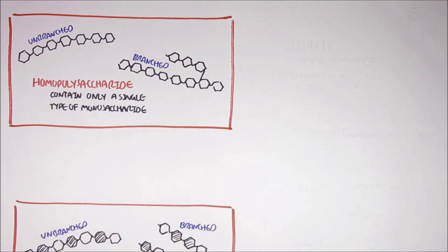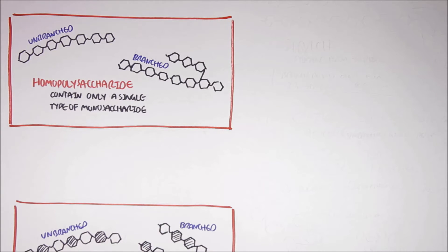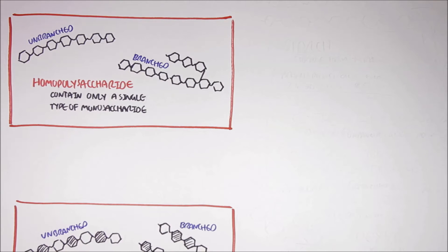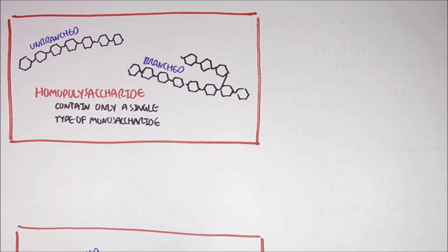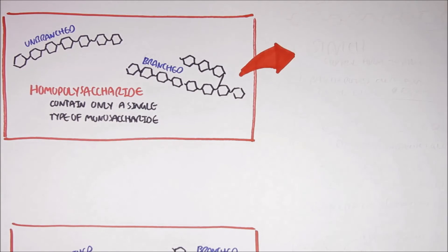What you have to understand is that the polysaccharides being drawn here are very small. In reality, polysaccharides are made up of thousands of monosaccharides linked together. In this section of the video, we will focus on homopolysaccharides, because they serve as storage forms of monosaccharides in both humans, plants, and even bacteria — so they are very important.